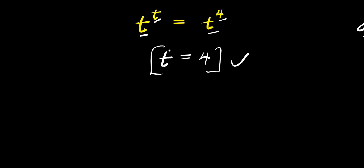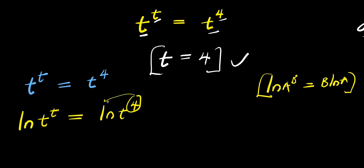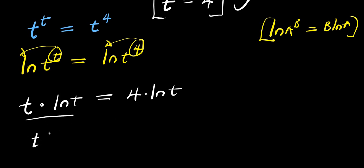That is not the only solution, so let's solve it step by step to find all solutions of t. We have t to the power of t equals t to the power of 4. I'm going to make use of natural log. I have ln of t to the power of t equals ln of t to the power of 4. Using the rule ln of a to the power of b equals b times ln a, we get t times ln of t equals 4 times ln of t.